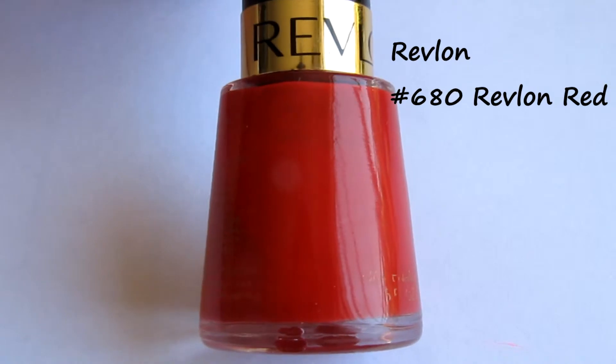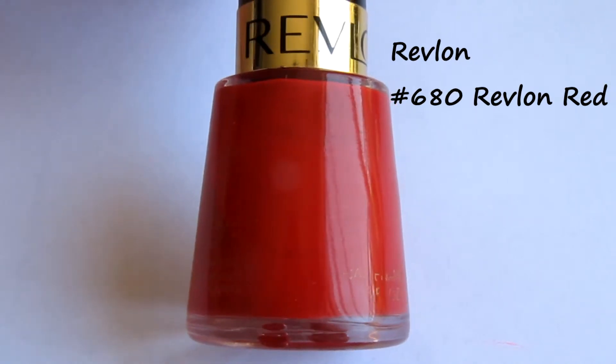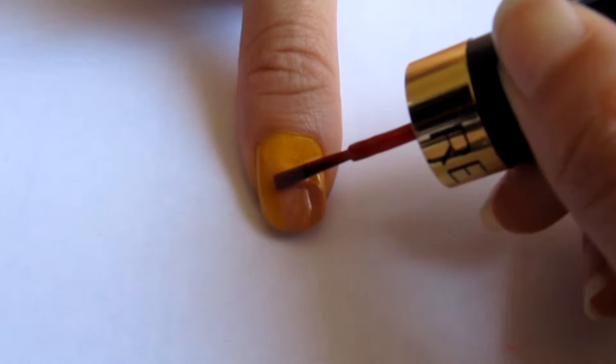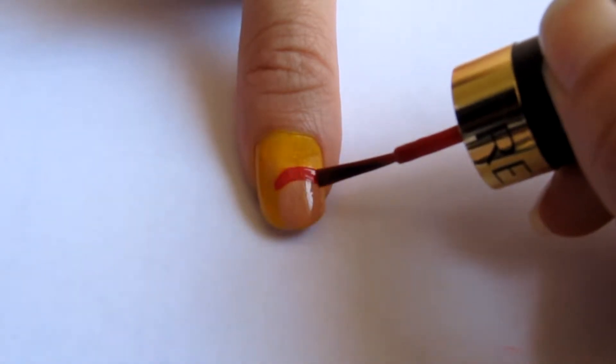The next step is Paddington Bear's bucket hat. I'm using this red nail polish. Do a longer stroke for the bottom part of the hat then do a shorter one on top.